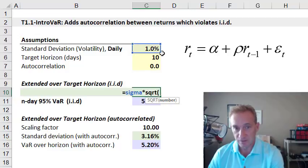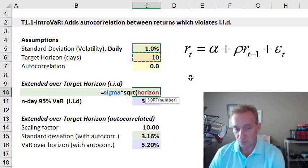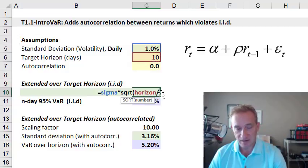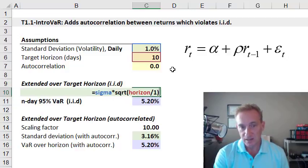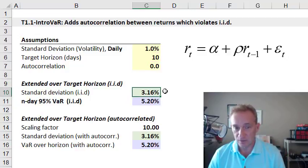Specifically, we multiply by the square root of the fraction: in the numerator is the 10 days to which we are scaling divided by the 1-day. That's where we're starting. That gives us 3.16% as the 10-day volatility.